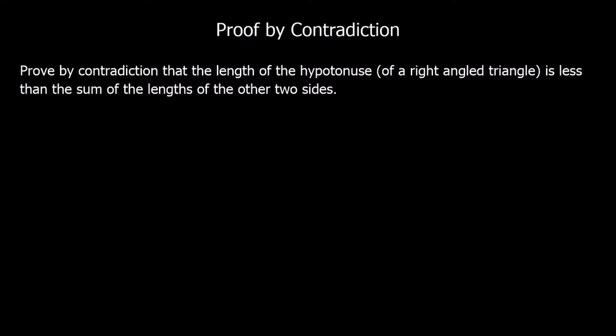In this video, we're going to look at proof by contradiction. With proof by contradiction, we look at what would happen if the opposite to what we're proving was true. We're going to find a contradiction, which means that the opposite cannot be true. So the first step is always assuming that the opposite is true.